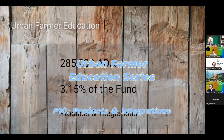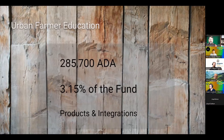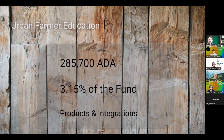Moving on to our third proposal, it's the Urban Farmer dApp Educational Series. This one is asking for 285,700 ADA, which is 3.15% of the products and integrations category. This is the next major step for the public release of our Urban Farmer dApp. During Fund 9 we had asked for funding and we were not able to do so, but we still completed all of the software and development side of the Urban Farmer dApp.